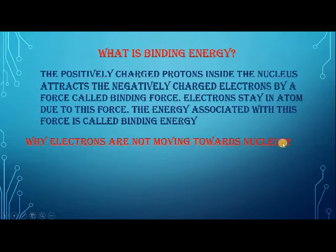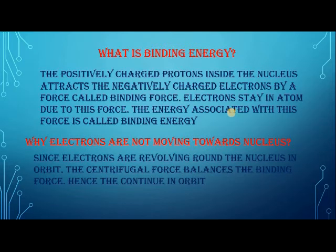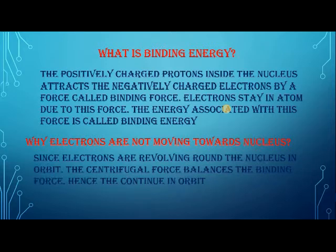Why don't electrons move towards the nucleus? If there is a binding force pulling them towards the positively charged nucleus, why don't they fall into it? Since electrons are revolving around the nucleus in orbit, the centrifugal force balances the binding force. Hence the electrons continue in orbit — they do not run towards the nucleus because the centrifugal force acts in the opposite direction to the binding force, making the electrons stay in their orbit.